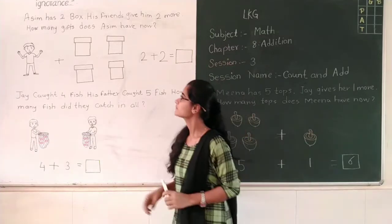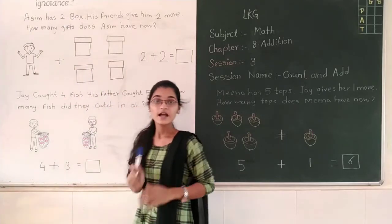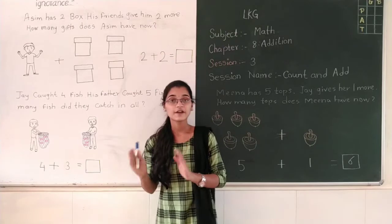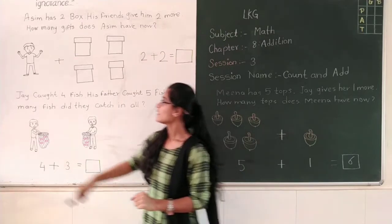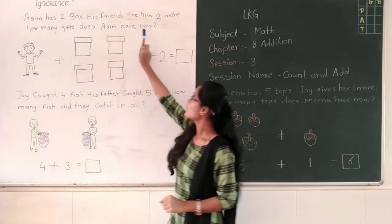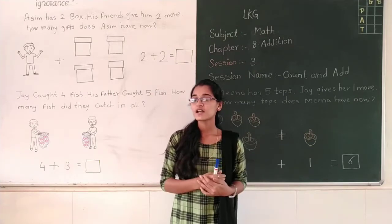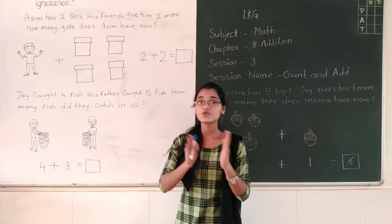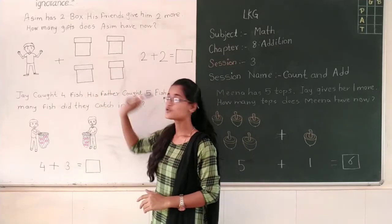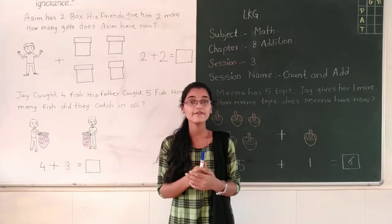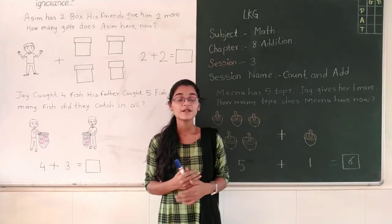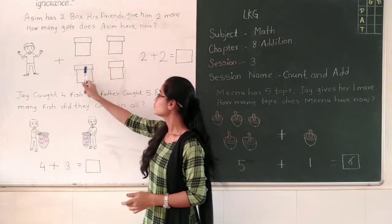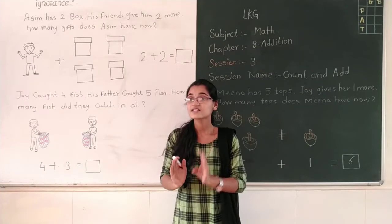Look at here. A Sink has 2 boxes. His friend gives him 2 more boxes. 1 and 2. So how many boxes does Sink have? You have to count all these boxes. 1, 2, 3 and 4. So Sink has 4 boxes.